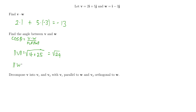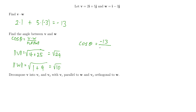The magnitude of w is the square root of the squares of its two components: 1 squared is 1, and negative 3 squared is 9, so this becomes the square root of 10. So for these particular vectors, the cosine of the angle between them equals negative 13 divided by the square root of 29 times the square root of 10.